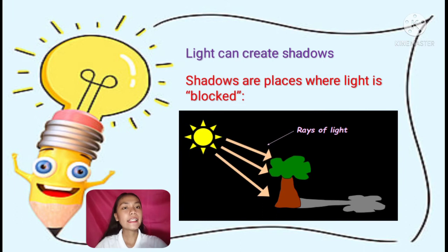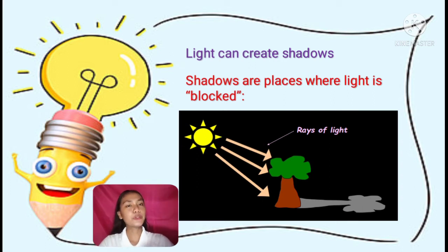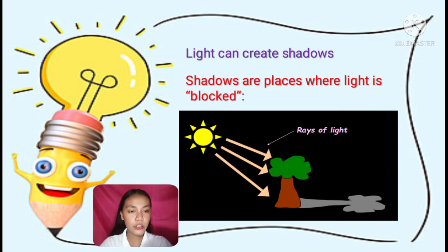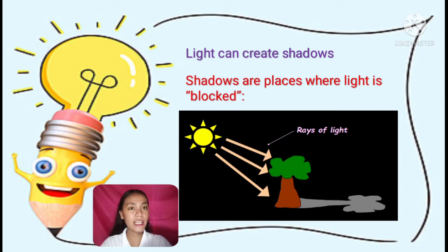Another property is that light can create shadows. Shadows are places where light is blocked. Shadows are produced when light hits an opaque object, which prevents the light beams from passing through. When an object blocks the light's path, darkness appears on the other side — this darkness is called a shadow. For example, in this illustration, a tree prevents the rays of light from passing through, which is why it creates a shadow.